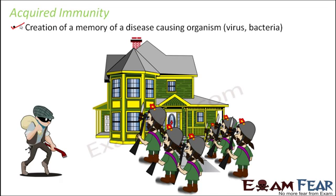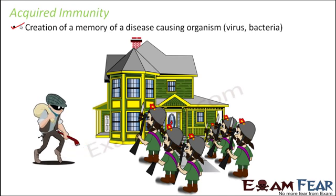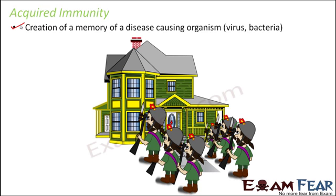Now let us suppose the same thief comes back. The security guards already know the power of the thief. However, if a gang of robbers came instead, the guards might not be able to protect the house because they are not aware of the robbers. But if the same thief comes back, the security guards will protect the house and the attack will become a failure.